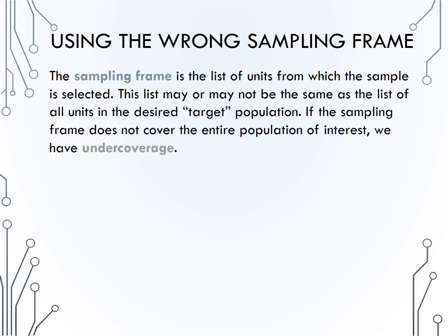Another example of selection bias is when we use the wrong sampling frame. Remember from section 2.1 that the sampling frame is the list of observational units from which the sample is selected. Ideally, the sampling frame would include all observational units in the population. However, if this is not the case, we will miss sampling some portion of the population, which leads to what we call undercoverage.